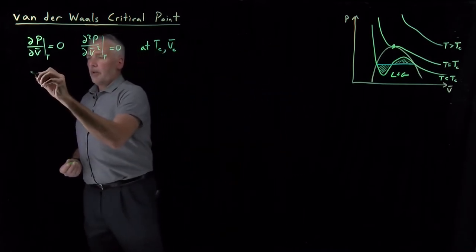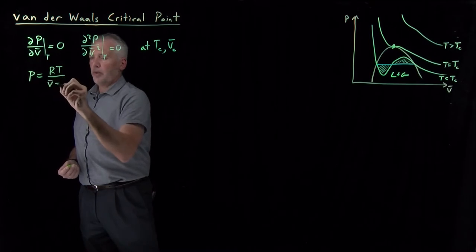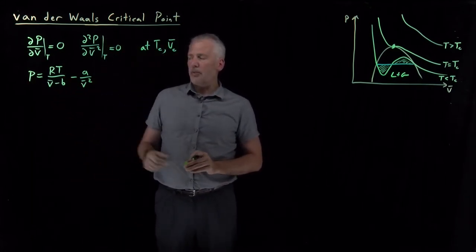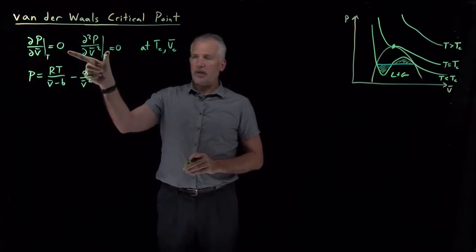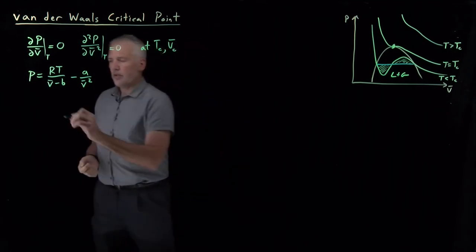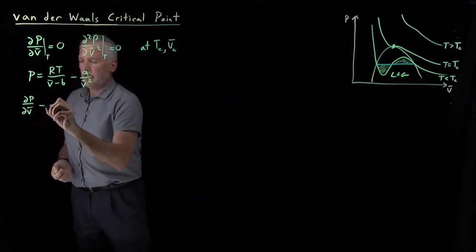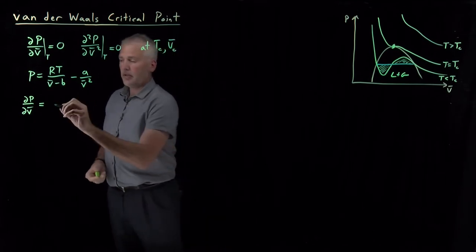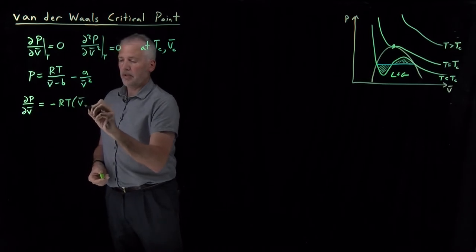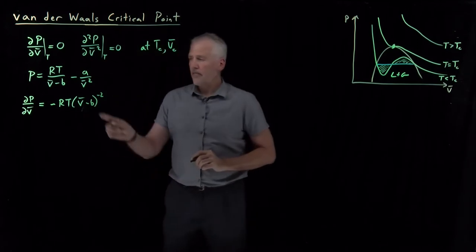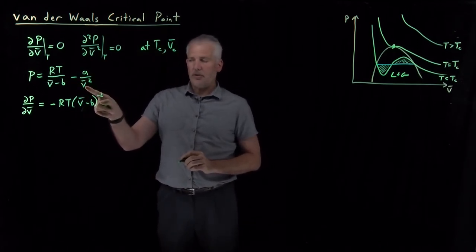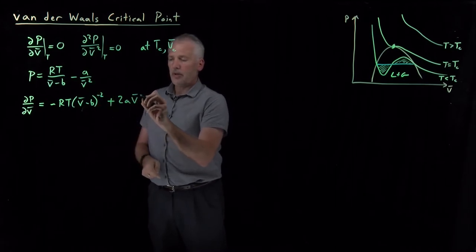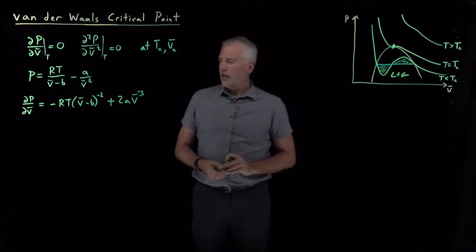Recalling what the van der Waals equation of state tells us — that's p described as a function of molar volume and temperature — I can take derivatives of this expression and set them equal to zero, and therefore solve for where the critical point is going to be. The first derivative of this function with respect to v-bar: the RT(v-bar minus b)^{-1} term gives a derivative of negative RT(v-bar minus b)^{-2}. The second term, minus a·v-bar^{-2}, gives a derivative of positive 2a·v-bar^{-3}.